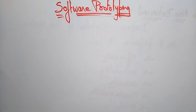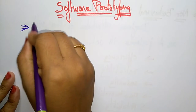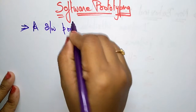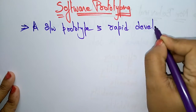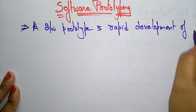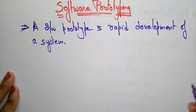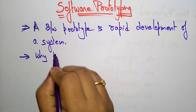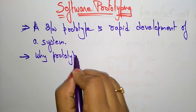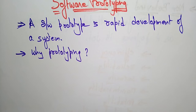Welcome students. Coming to the next topic in software engineering: software prototyping. So what is software prototyping? A software prototype is the rapid development of a system. Why do we require a prototype? Is it necessary to discuss about the prototype when developing a project? Why is prototyping required? Let me explain.